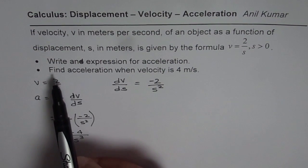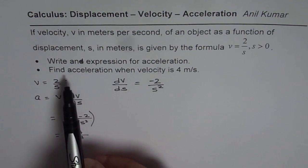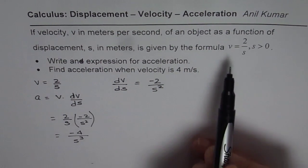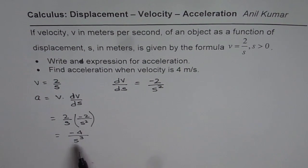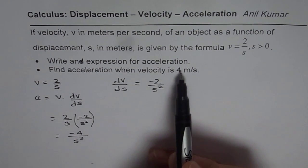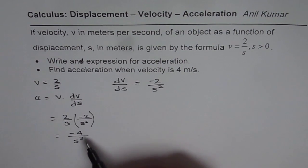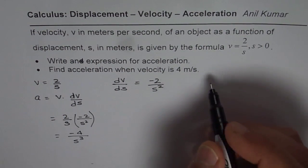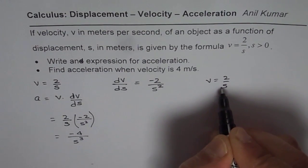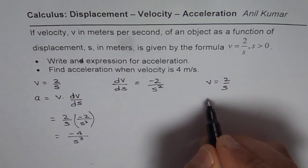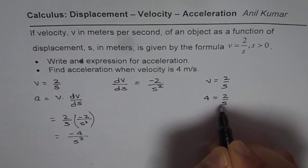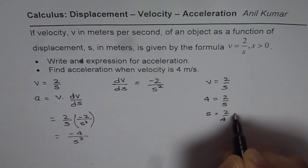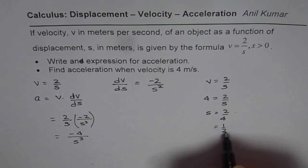Part b of this question is: find acceleration when velocity is 4 meters per second. We can find acceleration when velocity is 4 m/s, so let us first find what the displacement is at that time. We are given velocity equals 2 over s. If velocity is 4 meters per second, then 4 equals 2 over s, so s equals 2 over 4, which is half. So s is 0.5 for us.